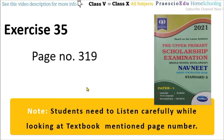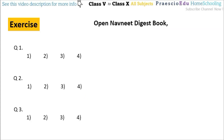Question number 1: How many edges does a cuboid have? As we know, a cuboid has 12 edges. This is given in option number 4, so option number 4 is the correct one.